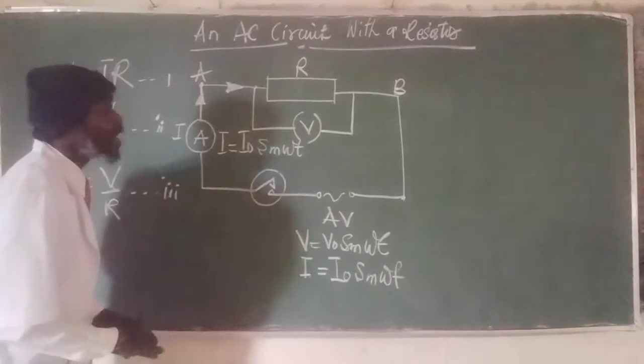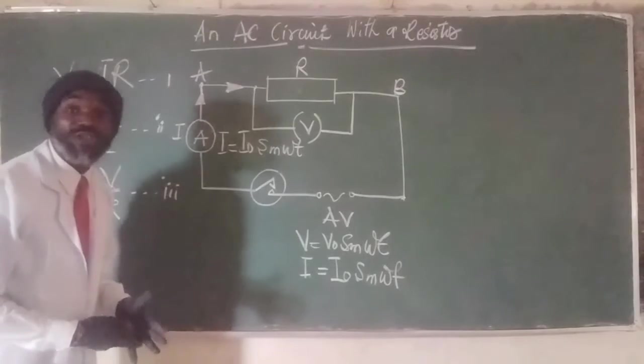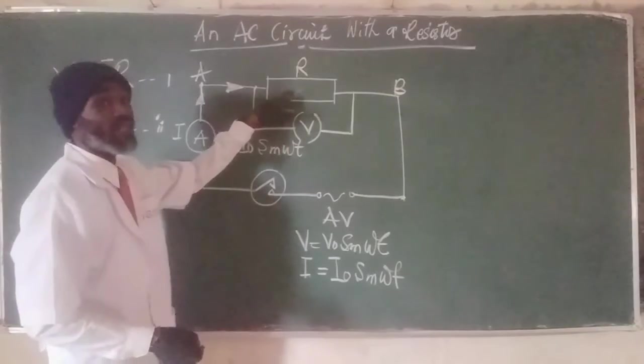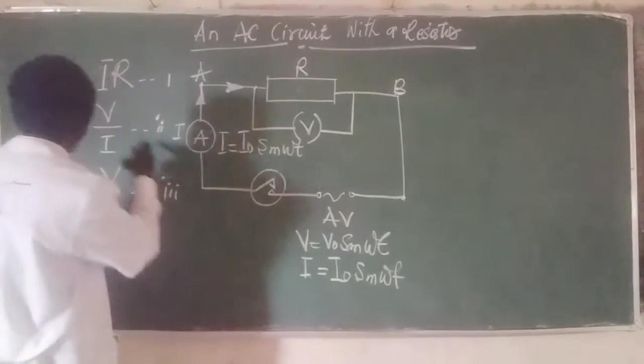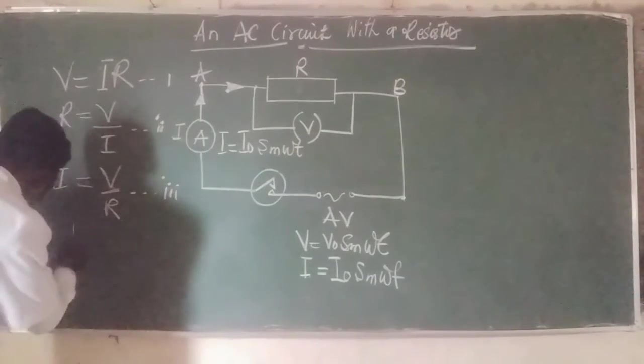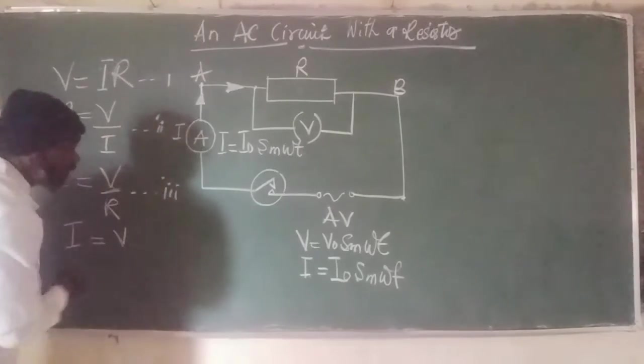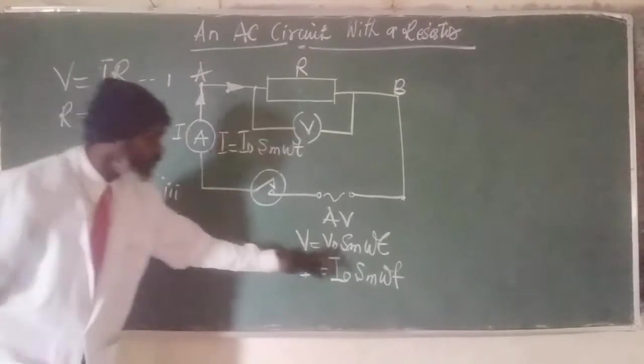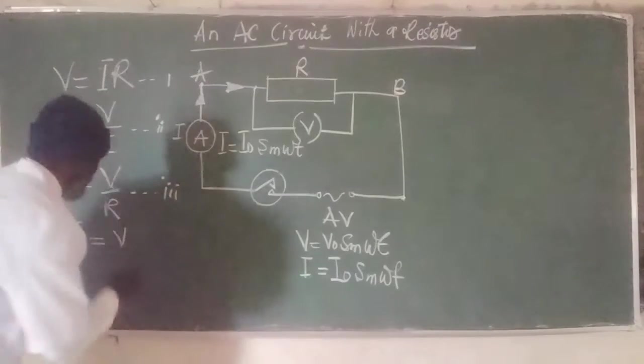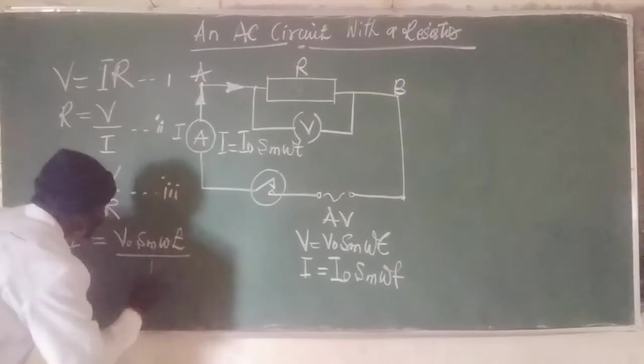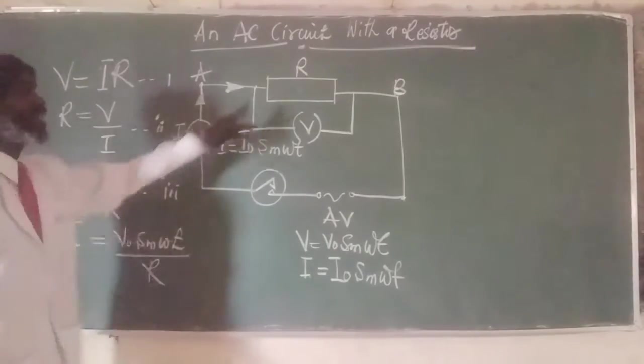Now we are looking for what? What do we want to calculate? We want to calculate the current flowing into this. It's very simple as well. Then we make use of this. Then we have current flowing into the resistor. It's giving us V naught. Because V is giving us V naught sine omega T, V naught sine omega T all over the resistance offered in that circuit.